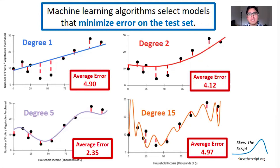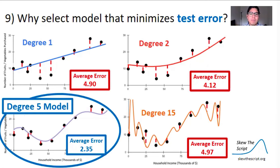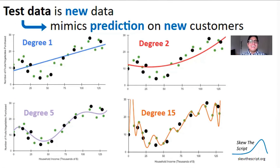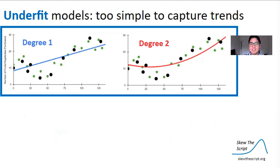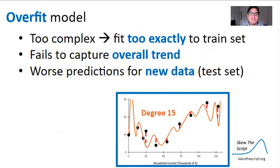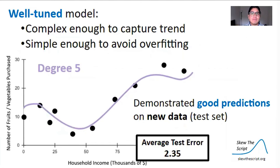Machine learning algorithms select models that minimize error on the test set, because performance on the test set mimics how the model performs on unseen future data — it's all about making good predictions. The degree-5 model demonstrated good predictions on our new data. Models that underfit are too simple to capture trends, as shown by the degree-1 and degree-2 models. An overfit model is too complex and fits too exactly on the training set, failing to capture the overall trend. A well-tuned model is a good balance: complex enough to capture the trend, but simple enough to avoid overfitting.